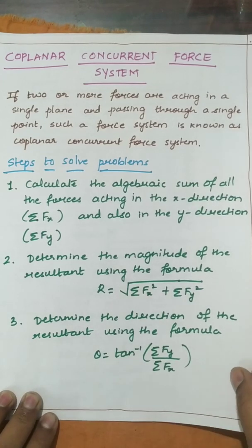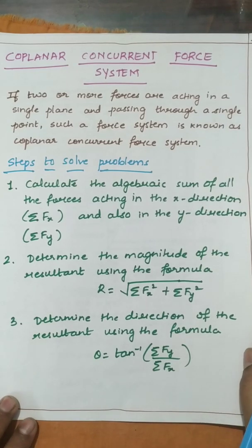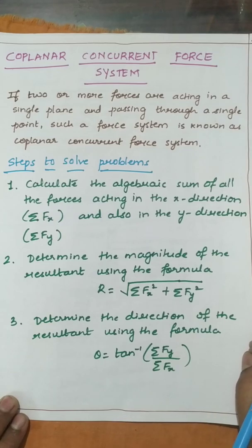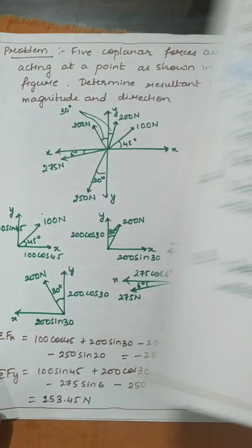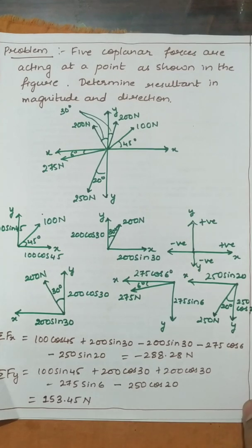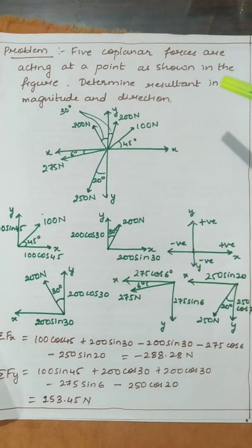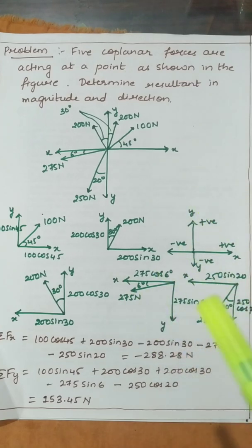This procedure is very simple. I will solve the first problem in a very detailed manner so that you can understand easily. Let us consider a problem where there are five coplanar forces acting at a point, and we have to determine the resultant — both magnitude and direction. I have resolved all the forces in x and y directions to make it simple.